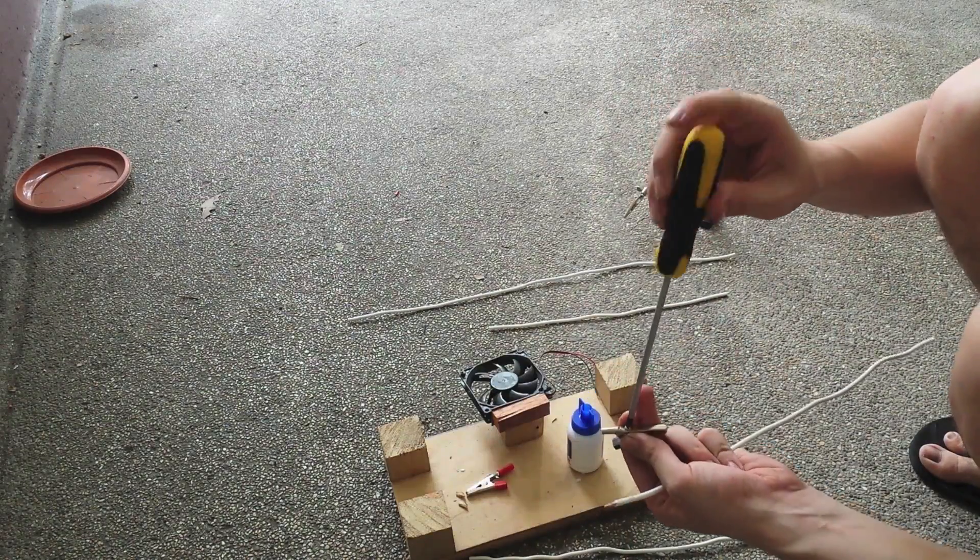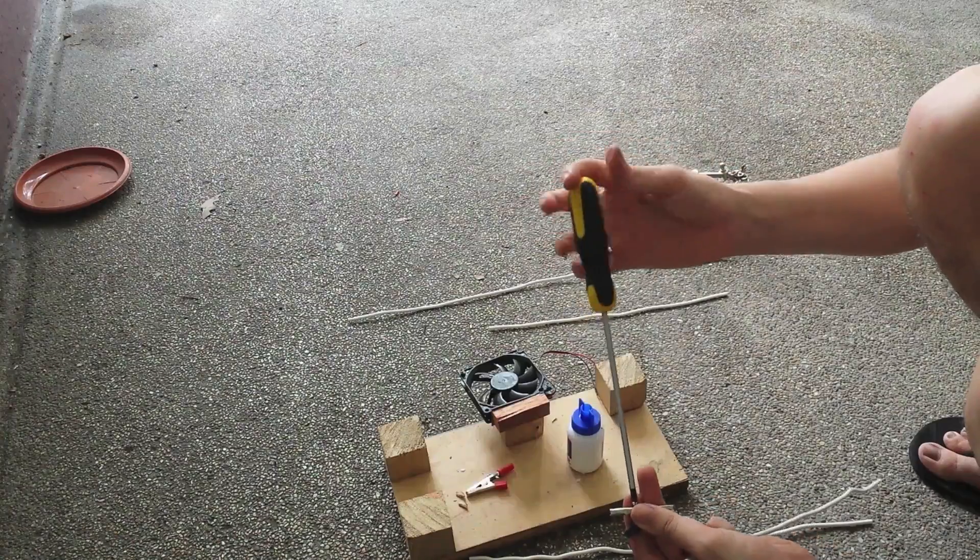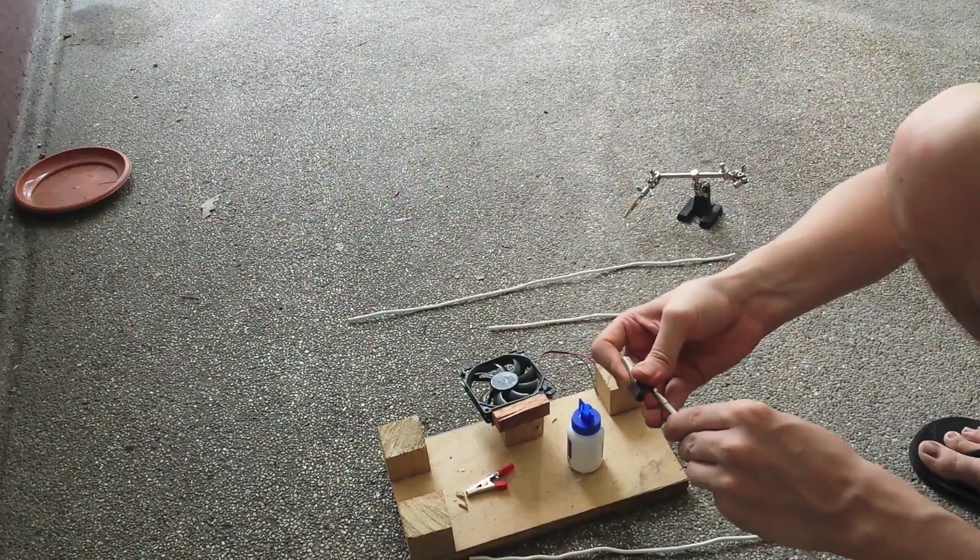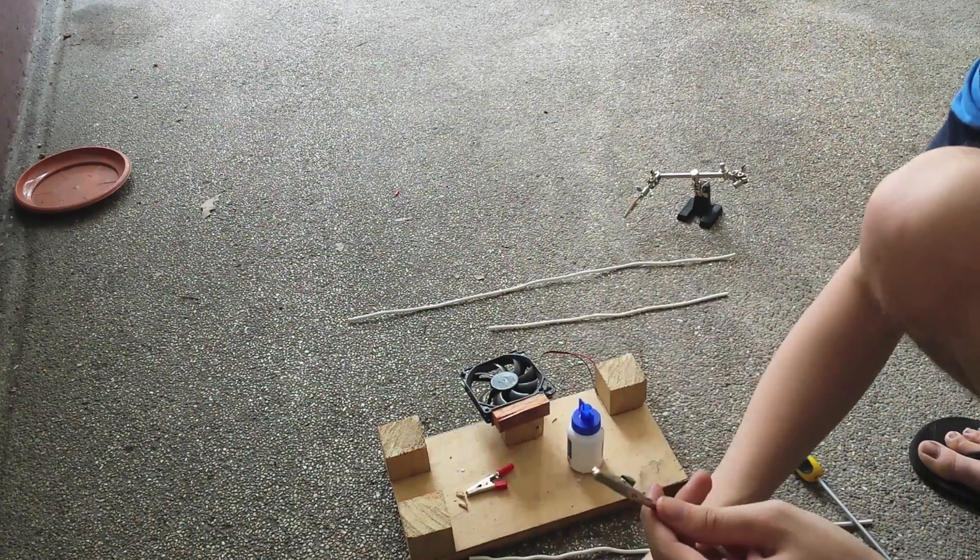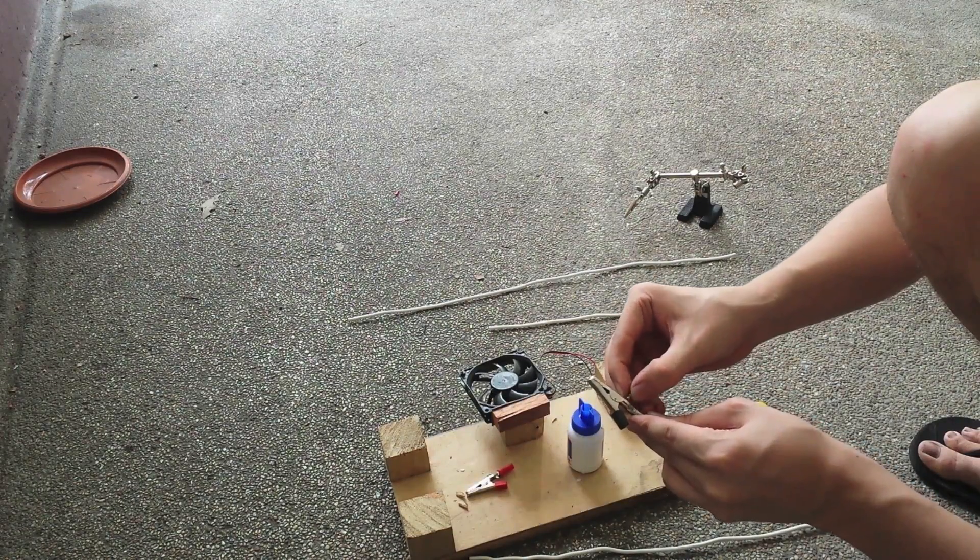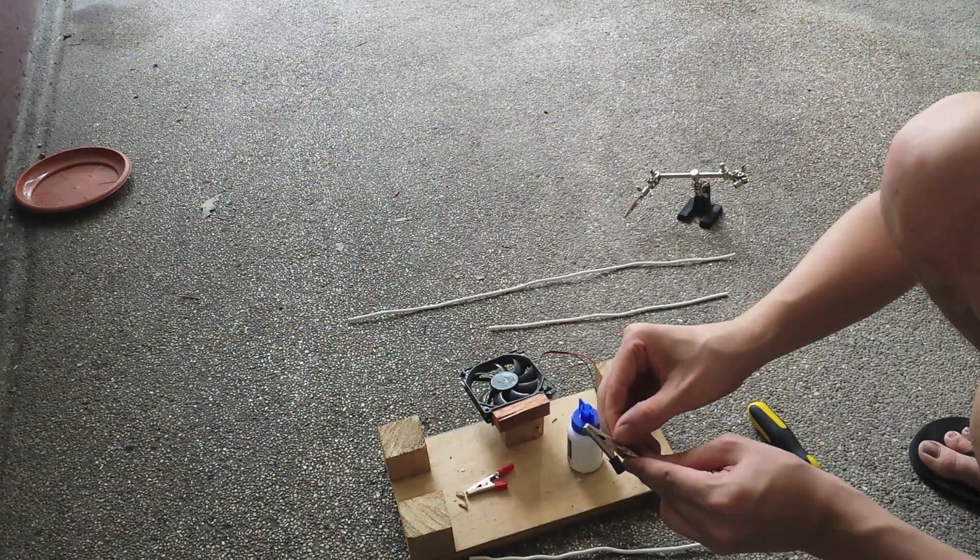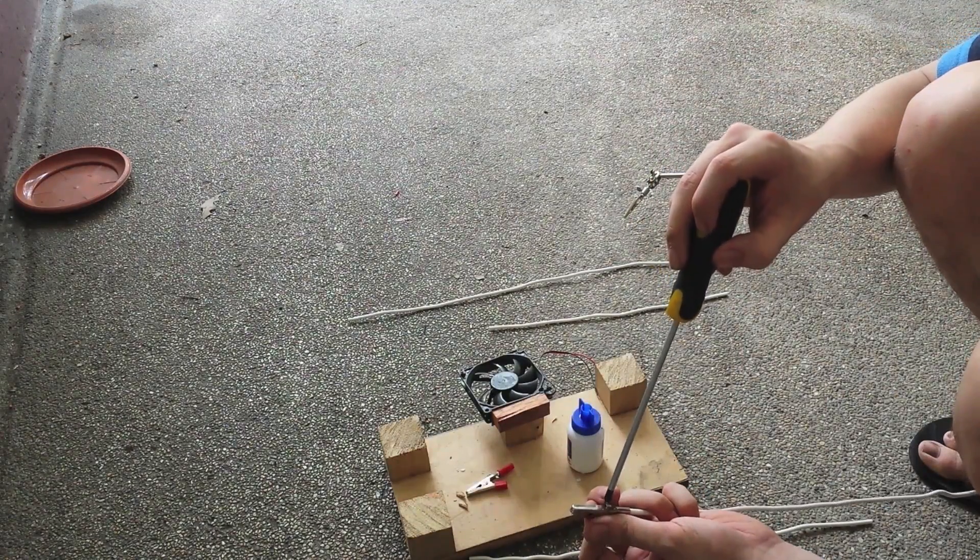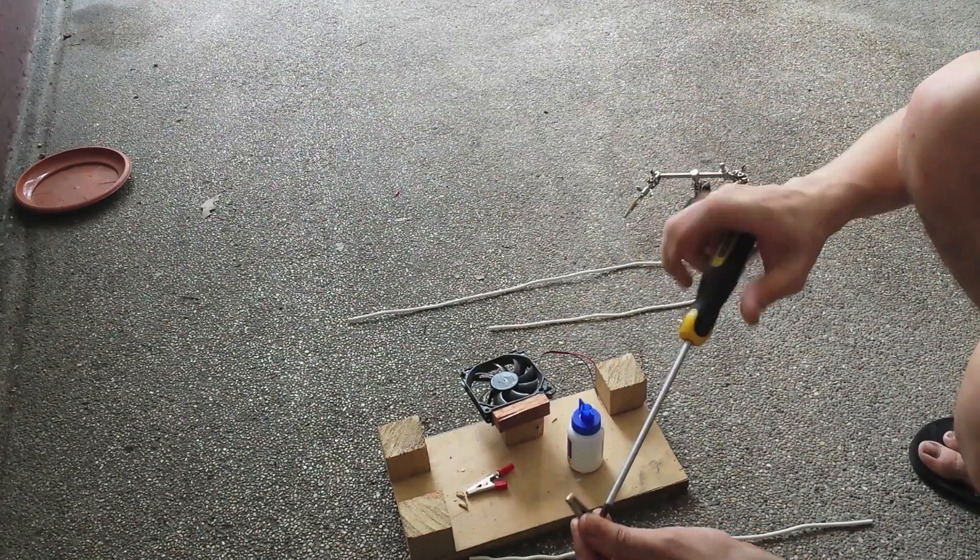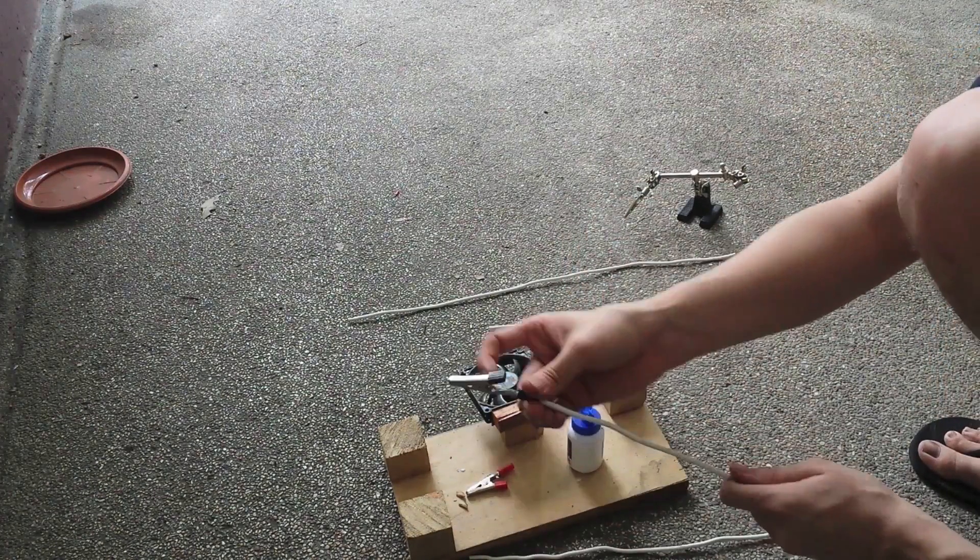Push the wire through until it goes over the hole there, then put the screw back in and do it nice and tight. Then we take the sheath and put it back over the connector.